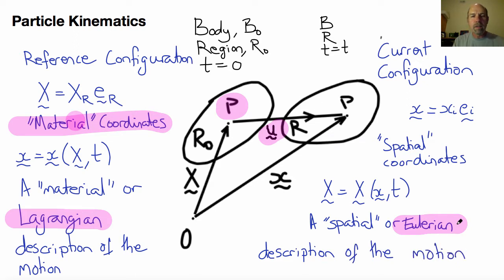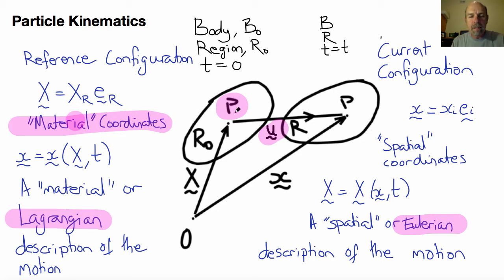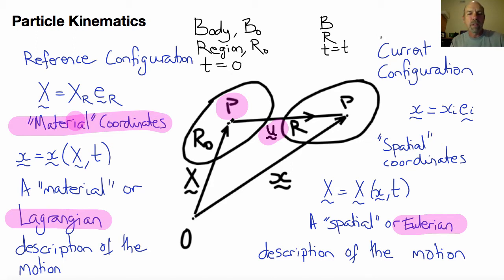Why do we call the description of the motion, when written in terms of the original or reference coordinates, a material description, whereas if it's in terms of the current coordinates, we call it a spatial description? The reason is because point P at different times occupies different current coordinates little x, but it always has only one set of original reference coordinates. By writing equations as a function of those original reference coordinates, we're effectively labeling the material points in their original state — a description as seen from an observer moving with the particle, as opposed to a spatial description from a stationary observer watching the particle move by.